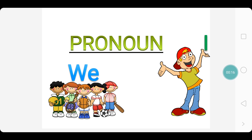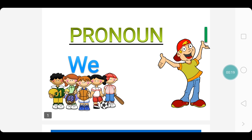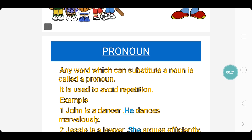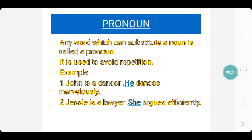A pronoun is a part of speech. Let us get into the definition of pronoun. Any word which can substitute a noun is called a pronoun. It is used to avoid repetition. For example, John is a dancer. He dances marvelously. Actually, we should say John is a dancer. John dances marvelously. But in order to avoid the repetition of John again, we are replacing John with he.